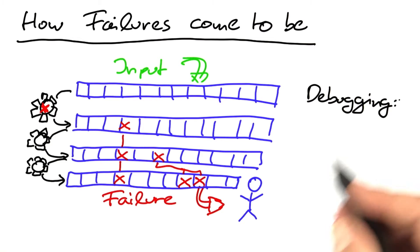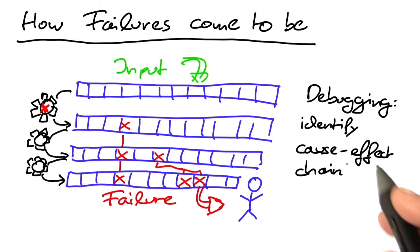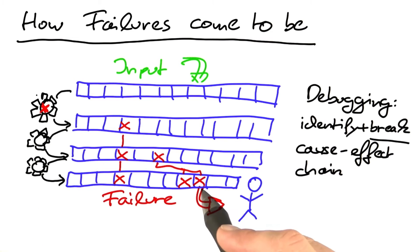When we're debugging now, we need to identify this cause-effect chain. Not only do we need to identify it, but we also need to break the cause-effect chain. If we can break this cause-effect chain from defect to failure, then we're done with debugging.